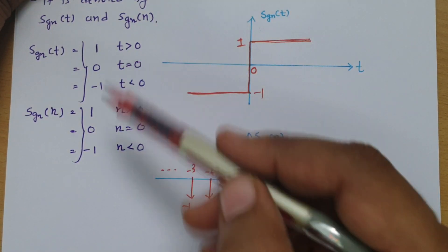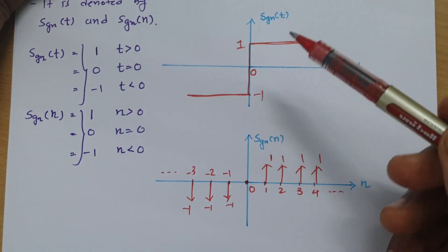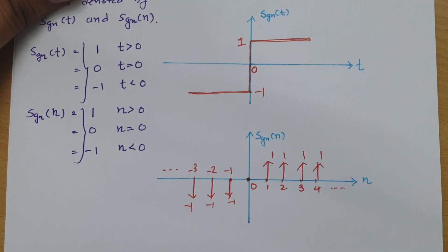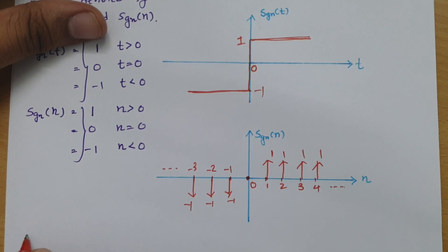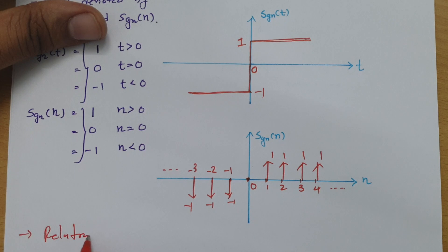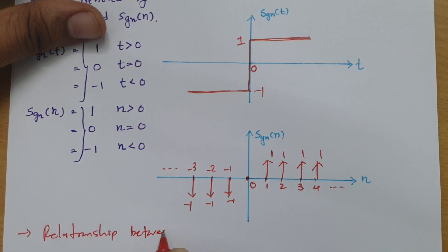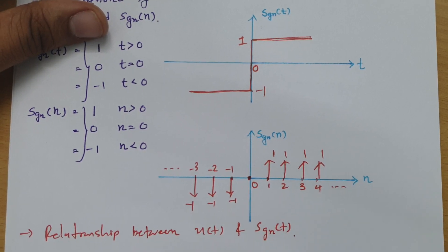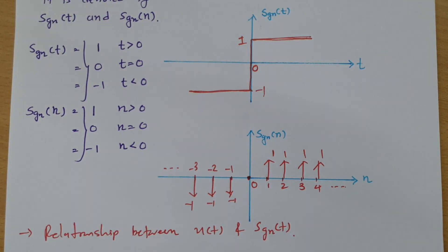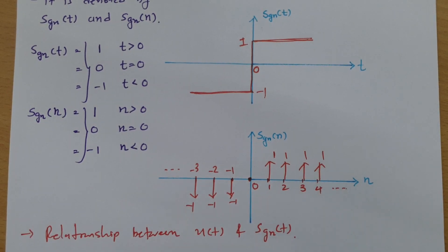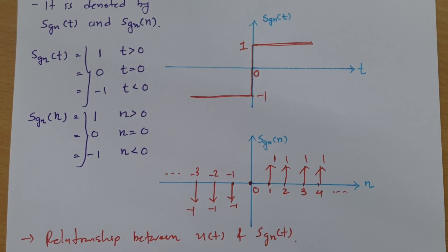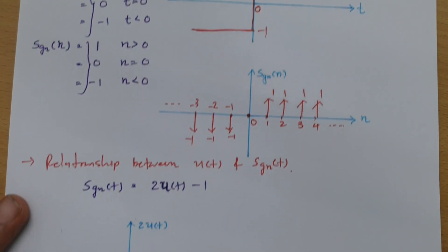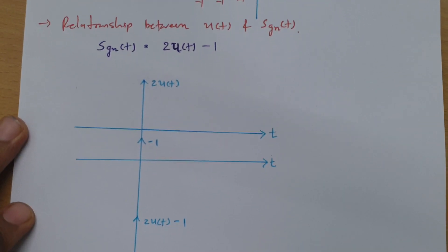Now I have defined the function and you can see its graphical representation. I will now explain the relationship between signum function and unit step, which is an essential question based on signum function. One should know what is the relationship between unit step and signum function. The relationship is: sgn(t) equals 2·u(t) minus 1. This is the basic relationship between signum function and unit step.